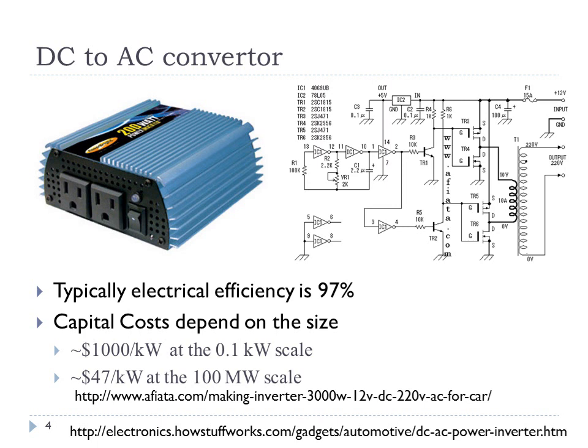At the small scale, the capital costs of DC to AC conversion can be quite large. If you're a solar photovoltaic operating at the hundreds-of-watts scale, your cost may be dominated by the DC to AC converter — especially now that solar cell prices are around $1 per watt ($1,000 per kilowatt), making the converter cost comparable to the cell cost.